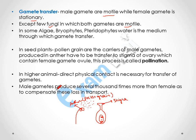In higher animals, direct physical contact is necessary for the transfer of gametes. Males produce several thousand times more gametes than females, because during transport there is some loss of male gametes, and the excess production compensates for this loss.